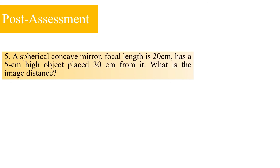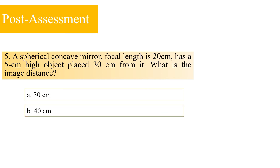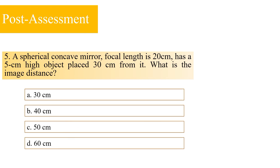The last question: A spherical concave mirror has a focal length of 20 cm and a 5 cm high object placed 30 cm from it. What is the image distance? A: 30 cm; B: 40 cm; C: 50 cm; or D: 60 cm. The correct answer for number 5 is 60 cm.